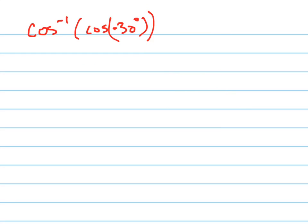Let's try another one. What's the cosine inverse of the cosine of negative 30 degrees? Now you might think, oh well, it's just going to be negative 30, because the cosine and the cosine inverse are inverse functions, they'll cancel each other out.